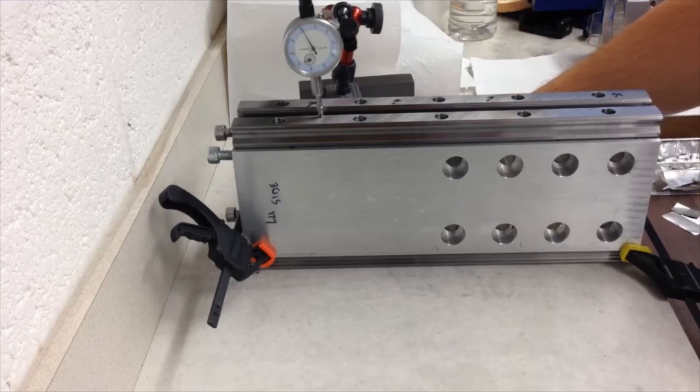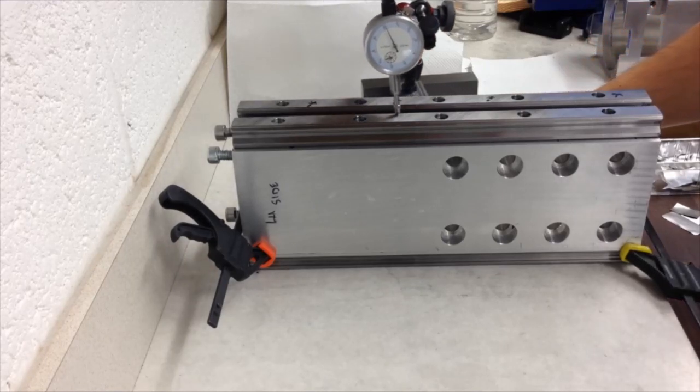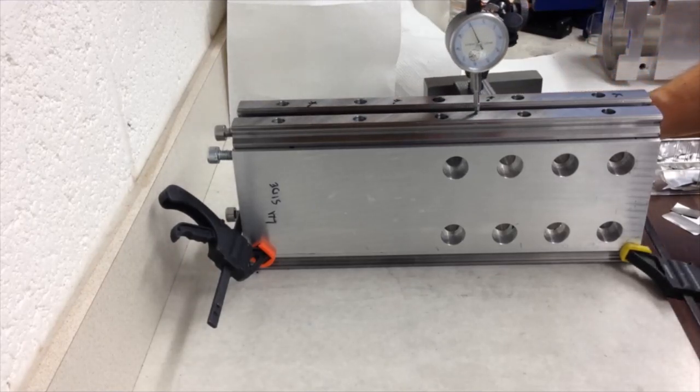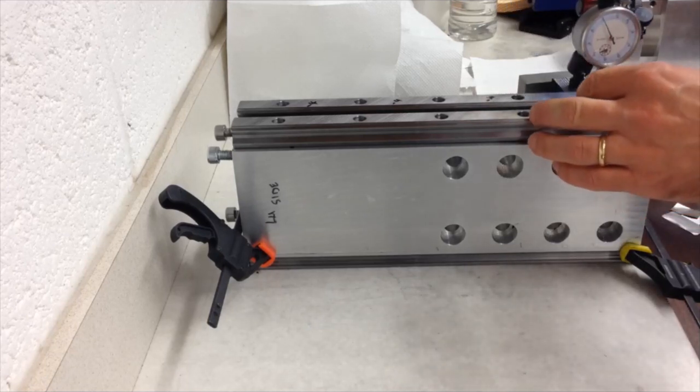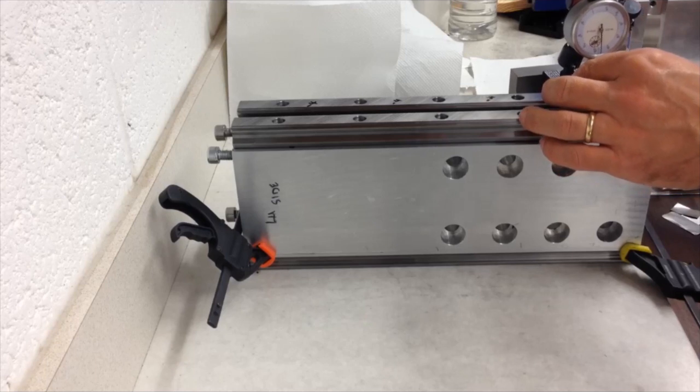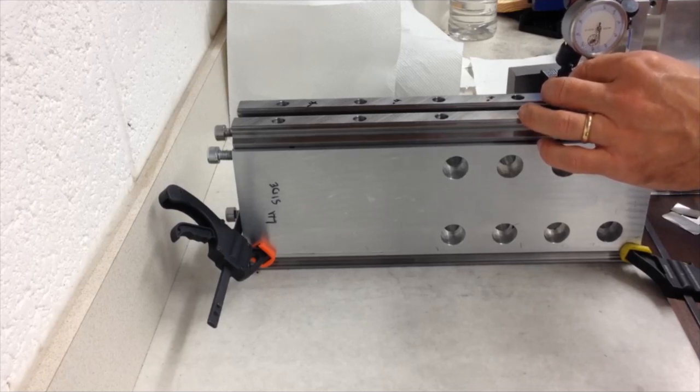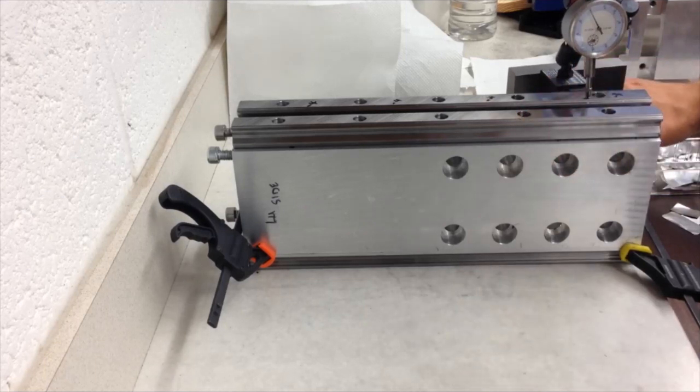So the first one I think I found whichever one was the highest and started there and got that shimmed into that level, and then you'll see in a minute I moved the DTI across onto the second rail.